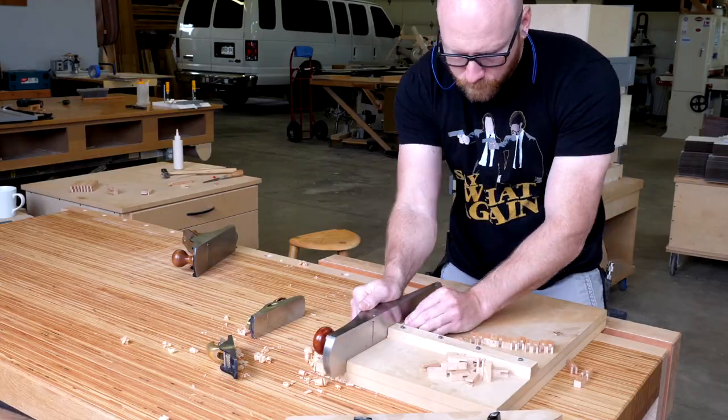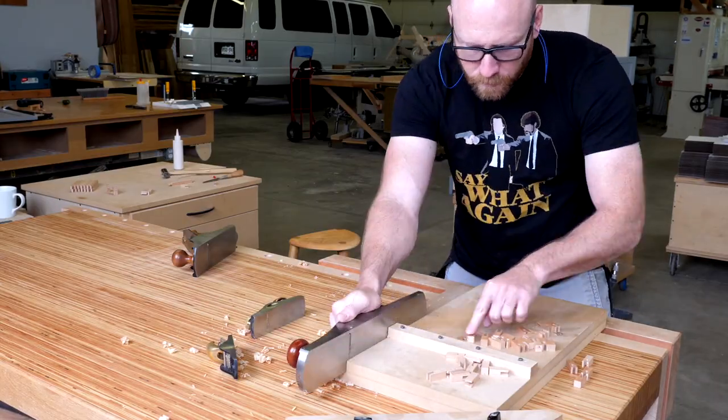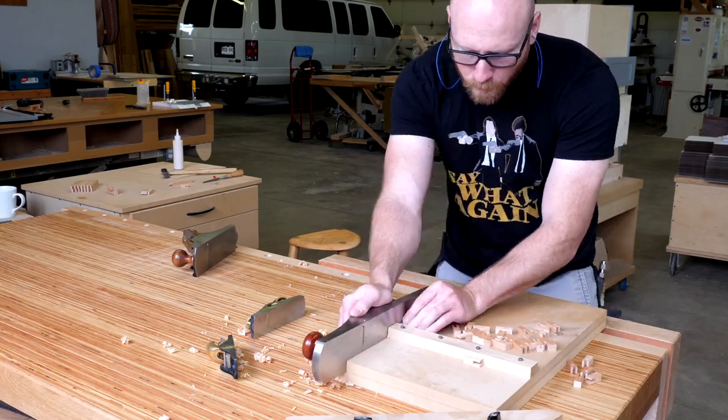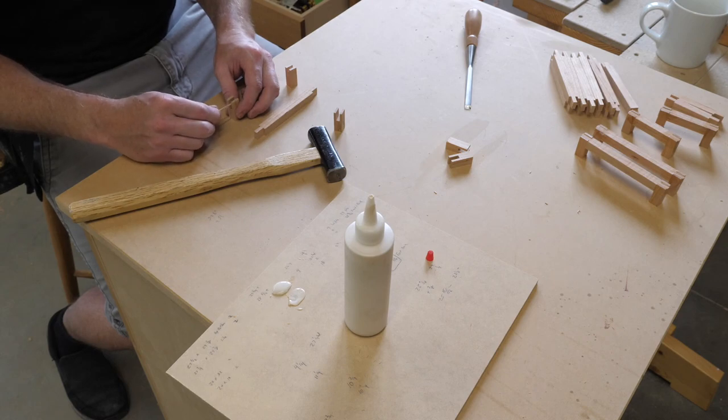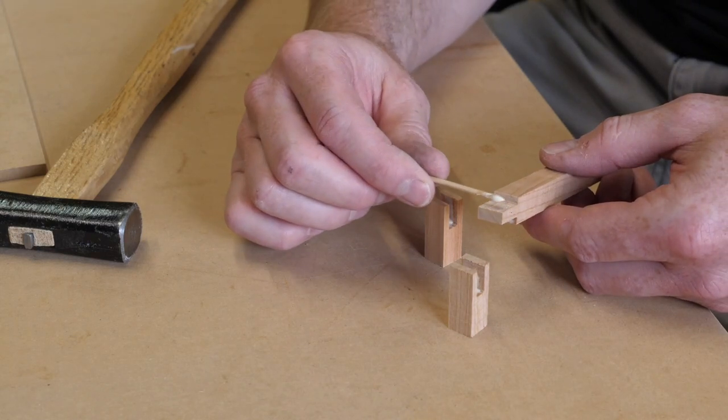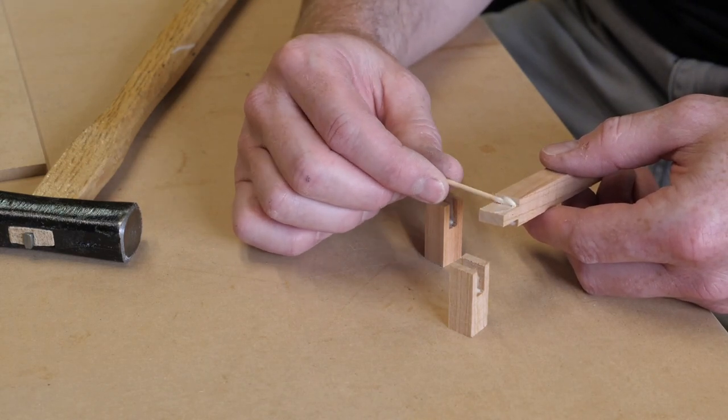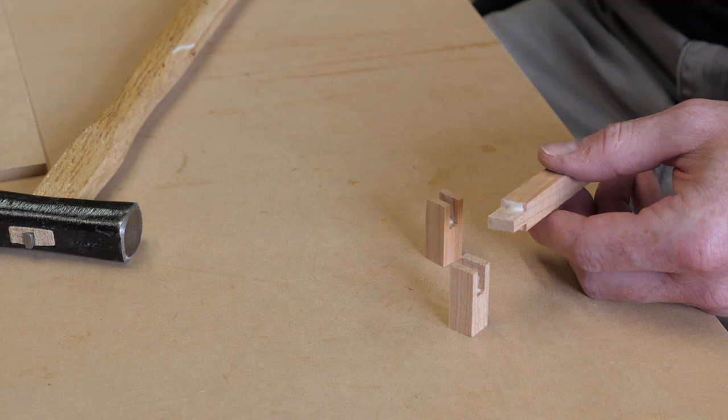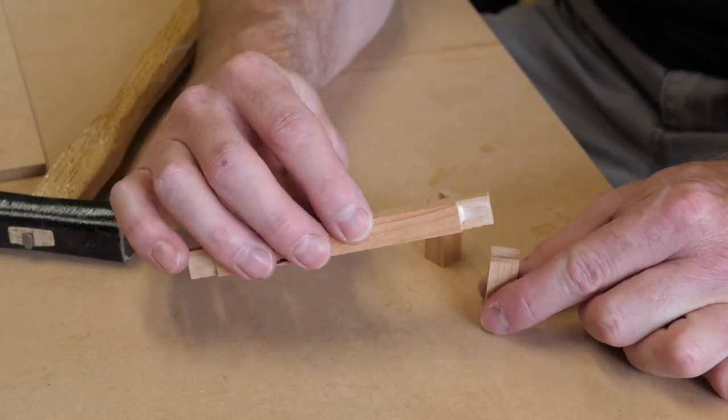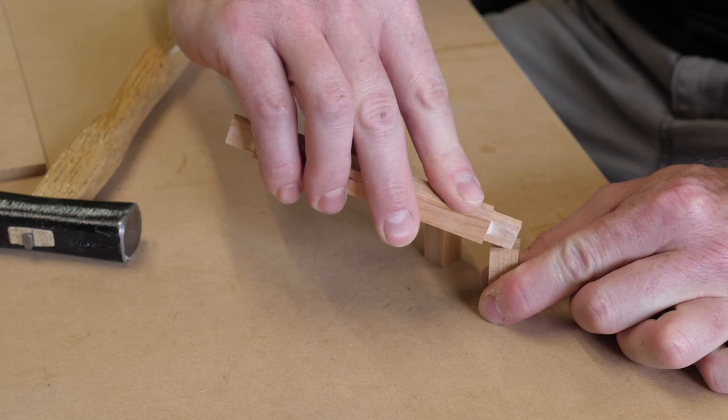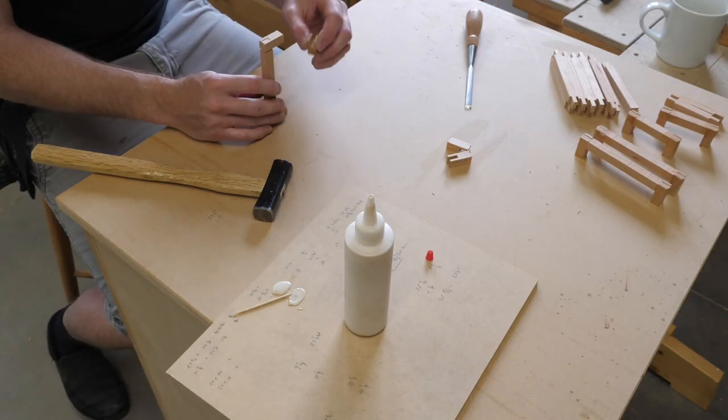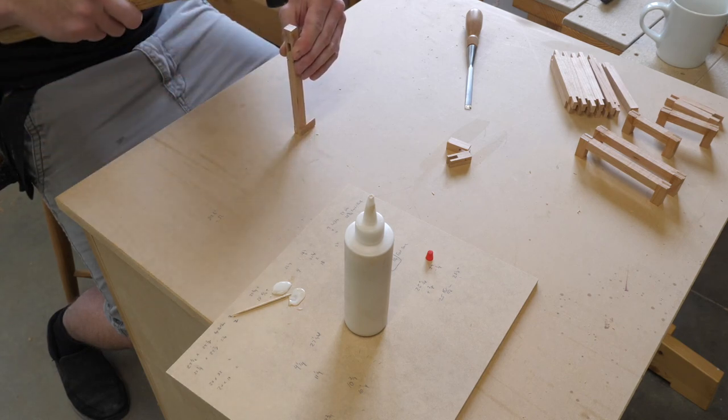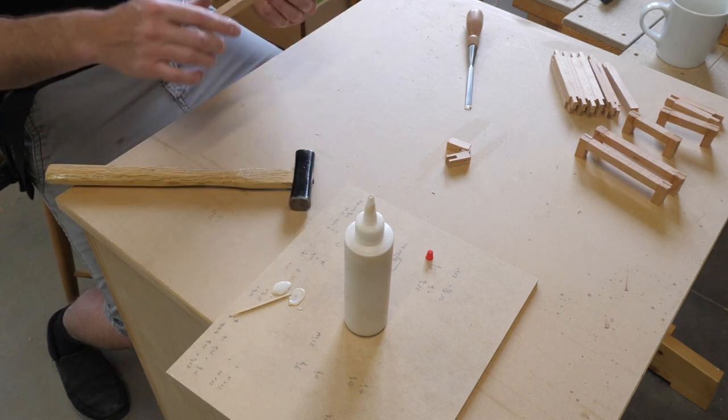Alright, who could name the movie my shirt is based on? I'll give you a hint, it's one of the better movies of 1994. Onward to the glue up. I sized the mortise and tenons so they wouldn't need a clamp. That does however mean a little pounding is in order. I used an extra piece with a mortise on the end to tap the joints closed.